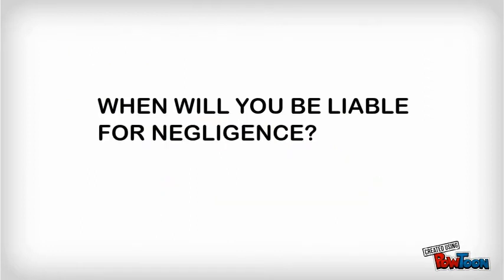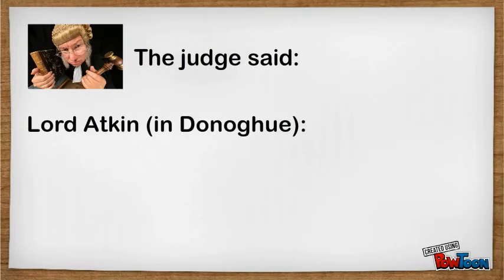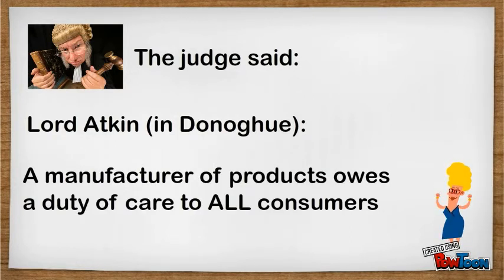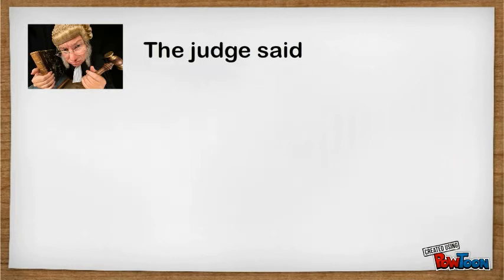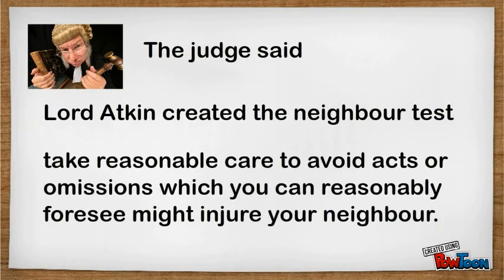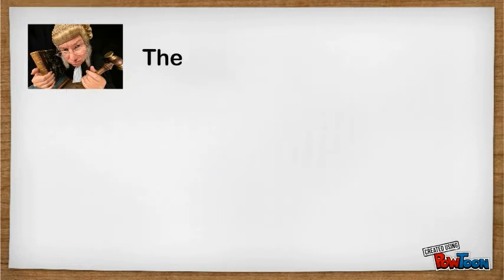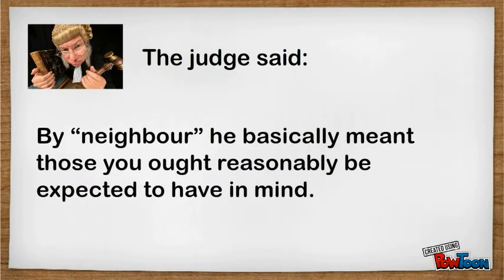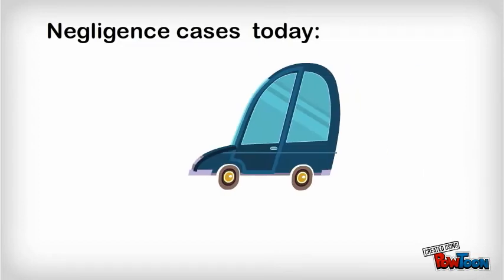When does liability for negligence arise? Lord Atkin, in his landmark judgment in Donoghue, said that a manufacturer of products that could not be inspected before use owes a duty of care to all those who might be expected to consume their product, not just the purchaser. Lord Atkin set out his general test, now known as the neighbour test, to establish when a duty of care might arise. He said you must take reasonable care to avoid acts or omissions which you can reasonably foresee would be likely to injure your neighbour. Over time, negligence claims have been recognised by the courts in a wide range of situations, not just in relation to manufactured goods.